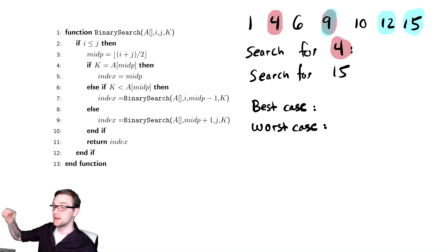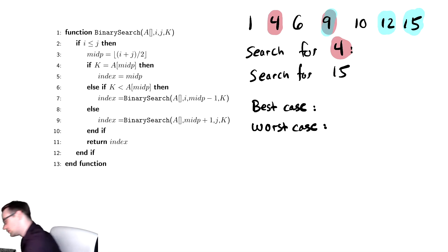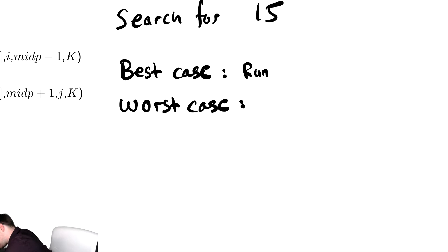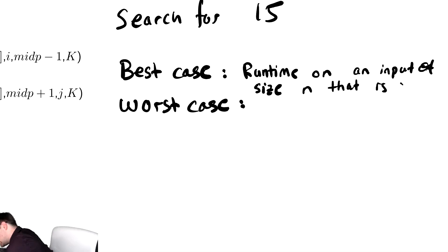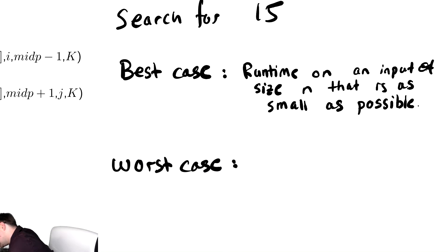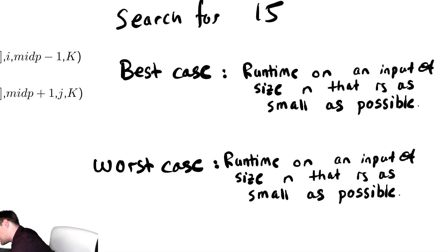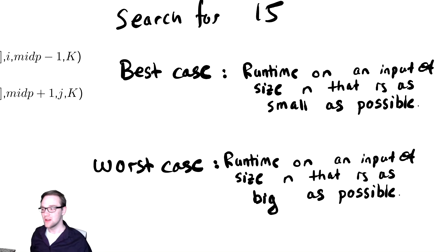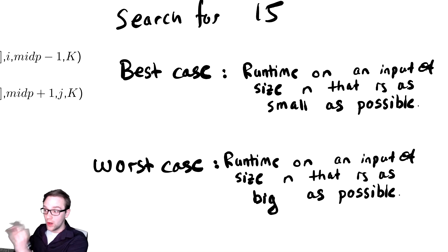Best case runtime is whatever input you could give that makes it run as quickly as possible — the runtime on an input of size n that is as small as possible, or just the quickest runtime. The worst case is the exact same idea, but the runtime is as big as possible — how could you make it take as long as humanly possible? Notice the input is still of size n. You can't just give no array; that's not valid because then every algorithm's best case would be theta of 1. The best case is when you assume a size-n input — what is the best you could hope for?